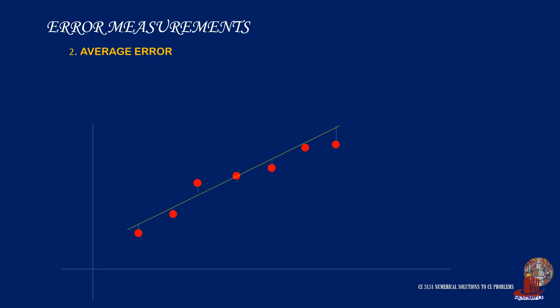Next is the average error, which is denoted as e sub 1. It is computed as the summation of the errors or discrepancies between the actual and approximate values divided by the number of points, thus its name average.